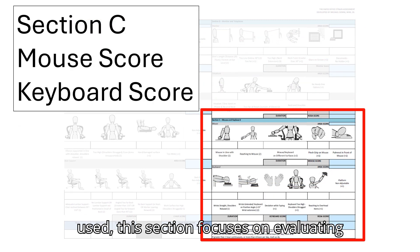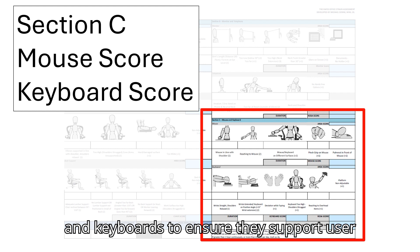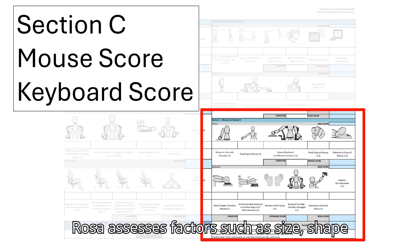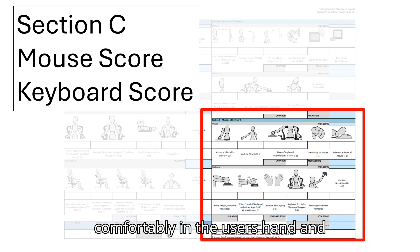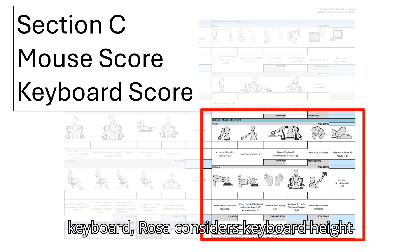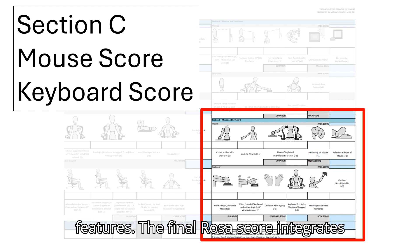Section C focuses on evaluating the ergonomic quality of the computer mouse and keyboard to ensure they support user comfort and productivity. For the mouse, ROSA assesses factors such as size, shape, and button placement to ensure it fits comfortably in the user's hand and promotes a relaxed grip. For the keyboard, ROSA considers keyboard height and angle, layout, and wrist support features.